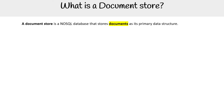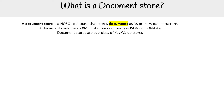Hey, this is Andrew Brown from Exam Pro. We are looking at document stores. A document store, or document database, is a NoSQL database that stores documents as its primary data structure. A document could be XML, but it's more commonly JSON or JSON-like. Documents are a subclass of key-value stores.